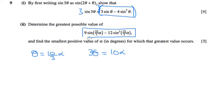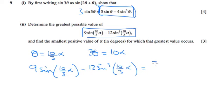And therefore this can be written as 3 sine 10 alpha. So 9 sine 10 over 3 alpha minus 12 sine cubed 10 over 3 alpha is actually just 3 sine 10 alpha. They're equivalent because these are equivalent up here.